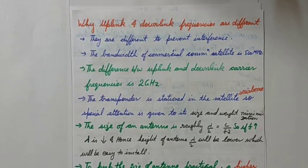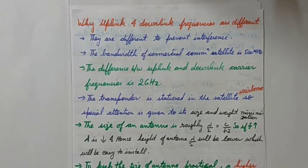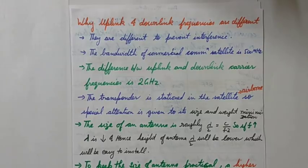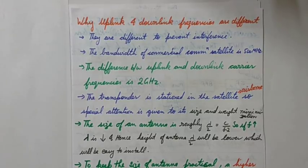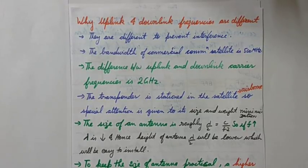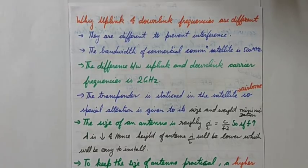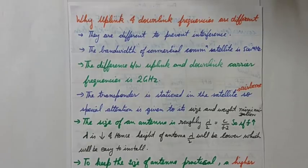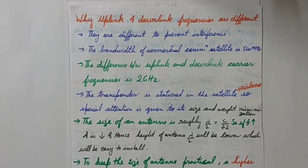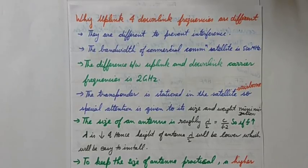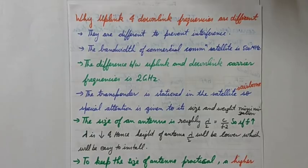Hello students, welcome to Smart Engineering Tutorials. In our last video we have seen satellite communication, its block diagram, and the different three main parts of the satellite communication: the uplink section, downlink section, and transponder. We have seen that uplink frequency is higher than the downlink frequency and the difference between the two is 2 gigahertz.